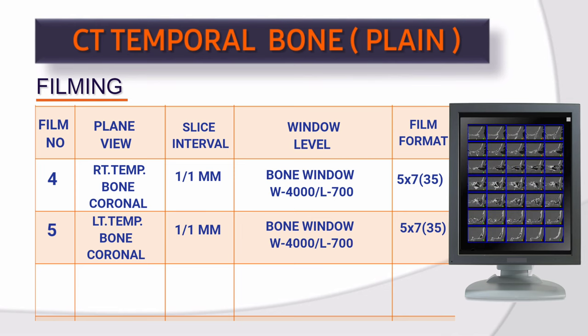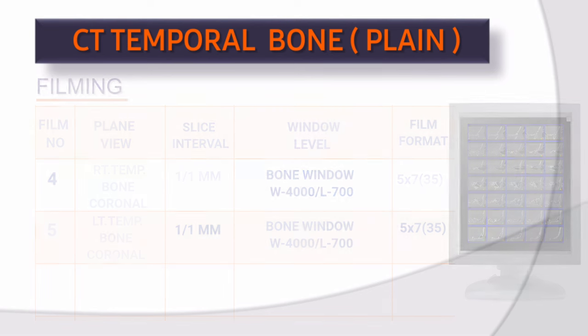Film 5: Plain view, left temporal bone coronal bone. Slice interval 1×1 mm. Window level: bone — window width 4000, window level 700. Film format: 5×7, 35 images.